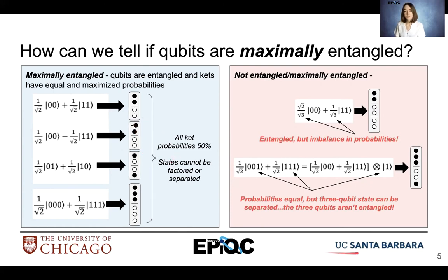Looking to the right, we see examples of states that are not entangled or not maximally entangled. Here we have an entangled state, but it has an imbalance in probabilities, which we can see in the visual representation. Below, we see that we have equal probabilities, but the three-qubit state can be separated — so these three qubits aren't actually entangled. We can check that out with the visual representation.